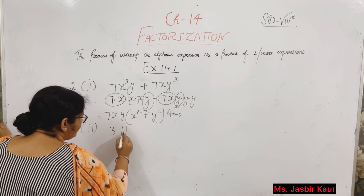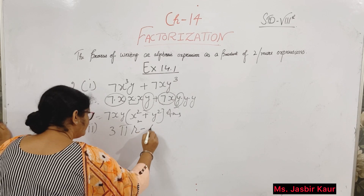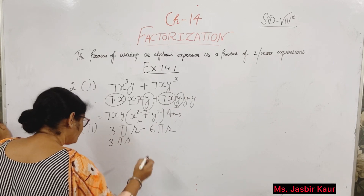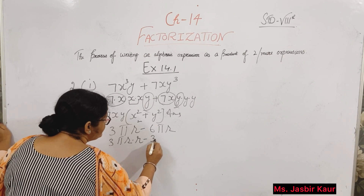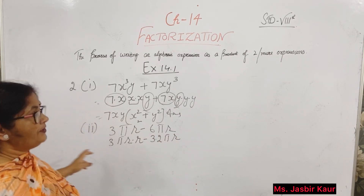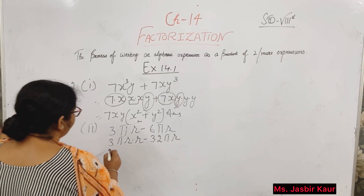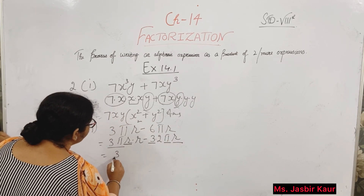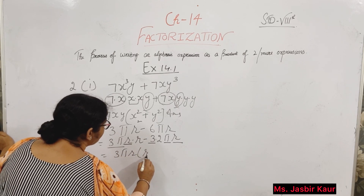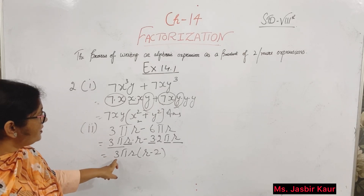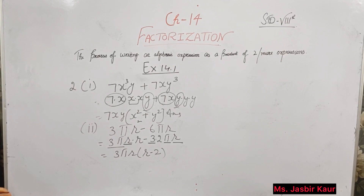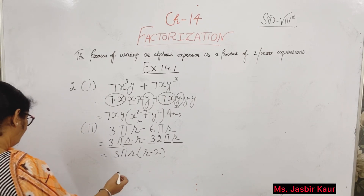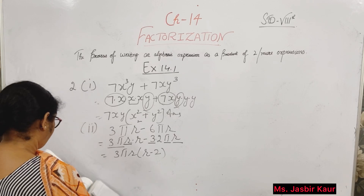Second part: 3πr squared minus 6πr. 3πr squared means r 2 times, and 3 twos are 6, so 6πr. Common numbers are 3, π, and r. Answer is 3πr into (r minus 2).